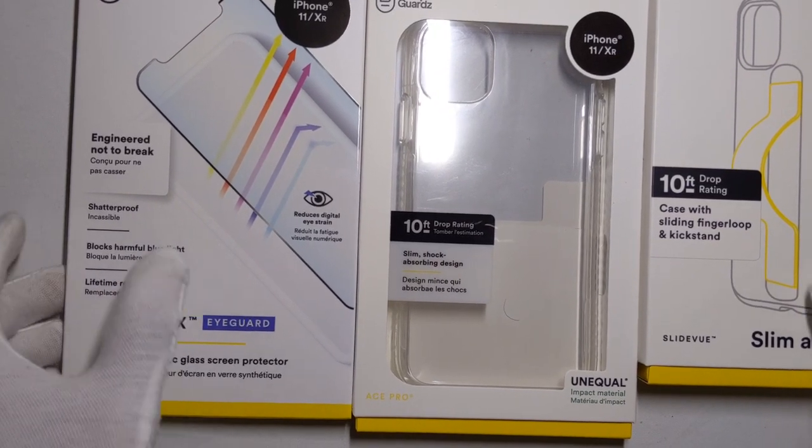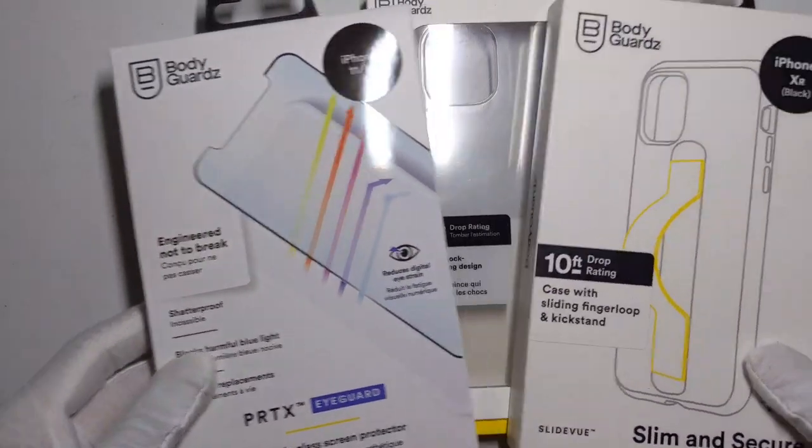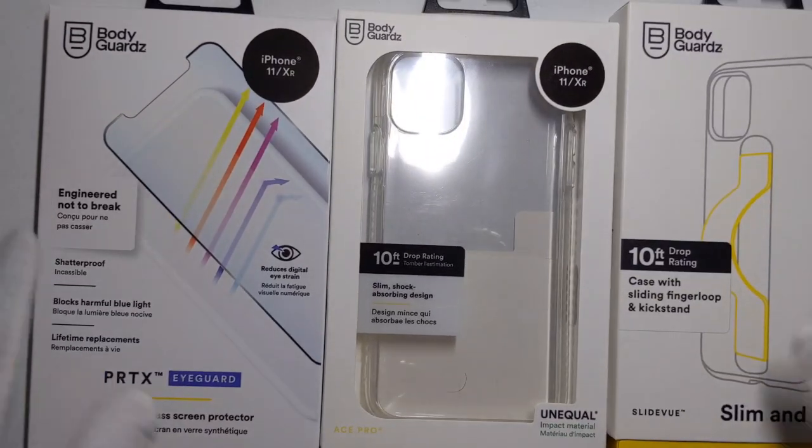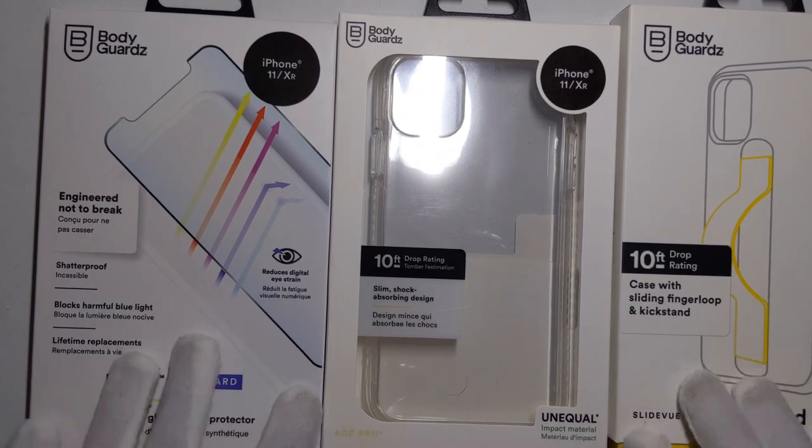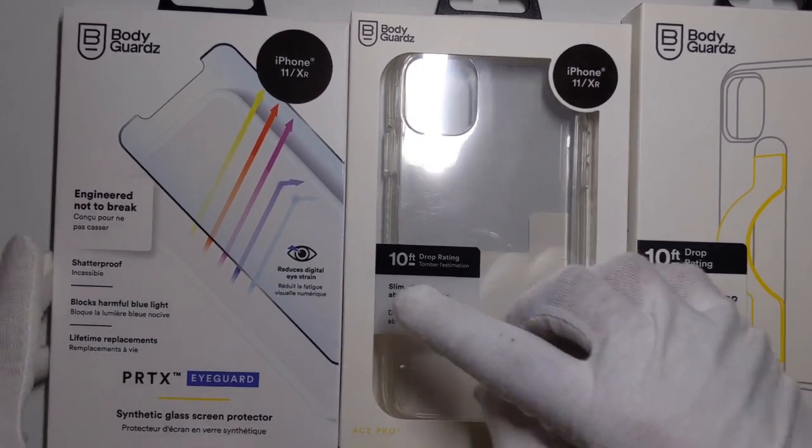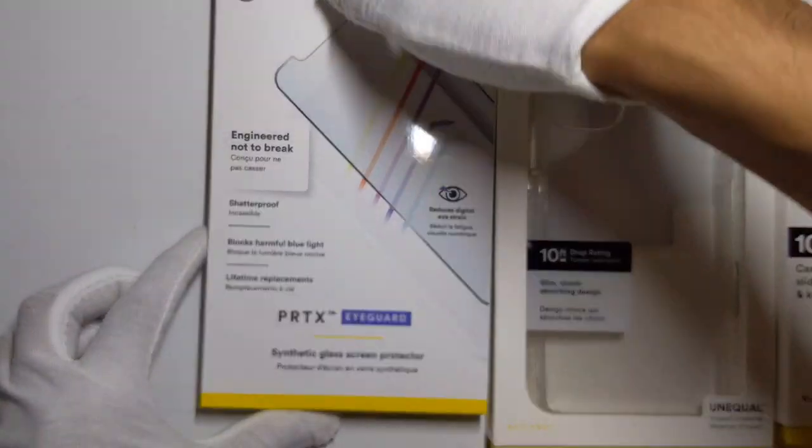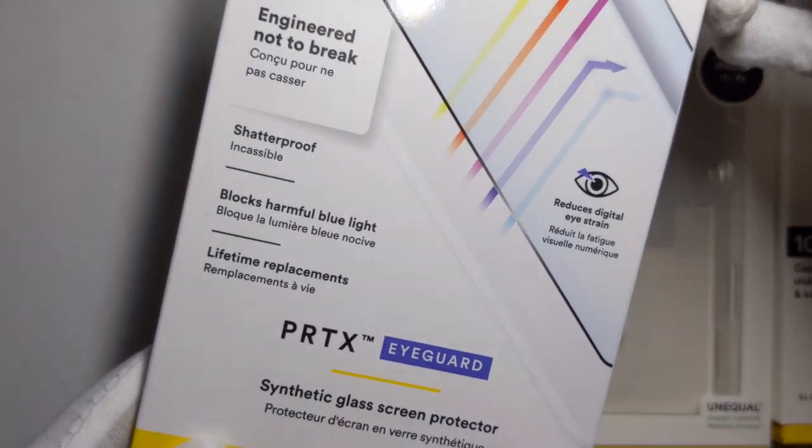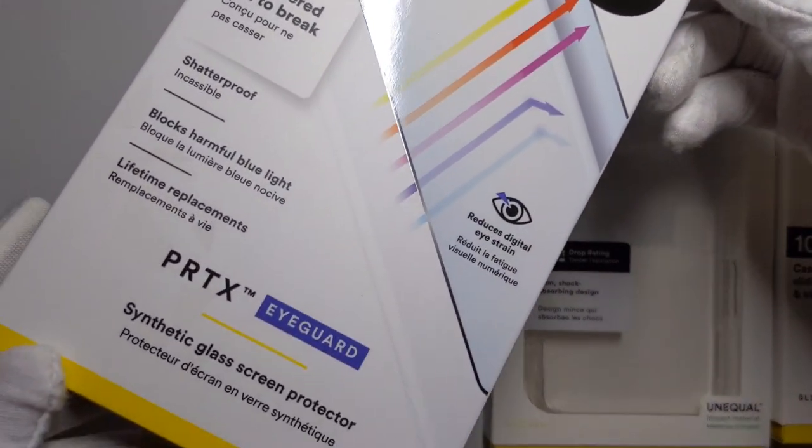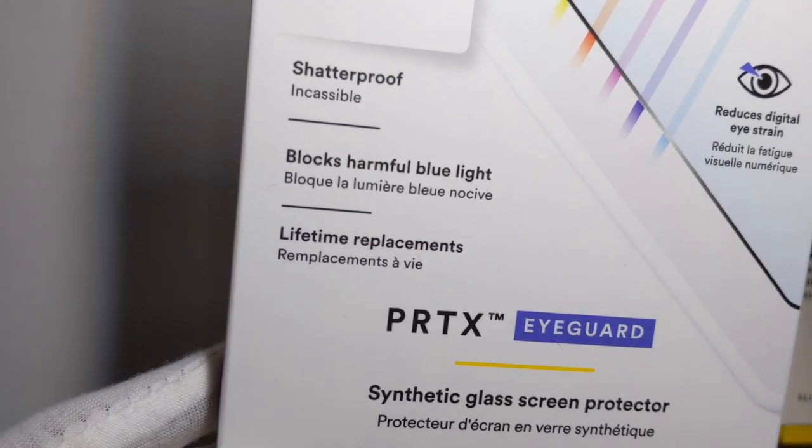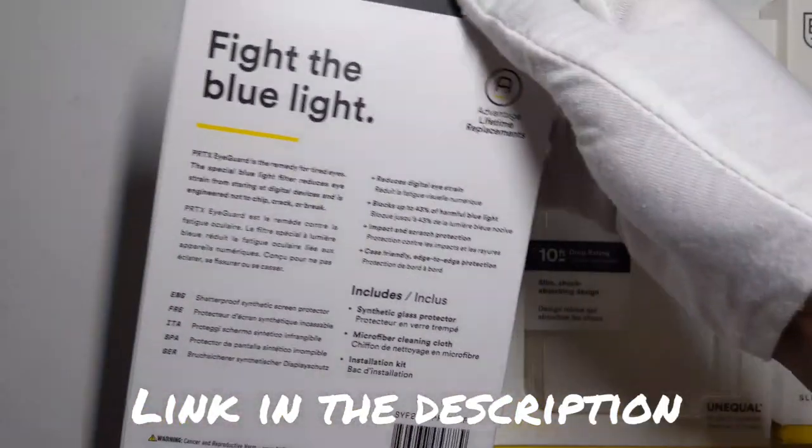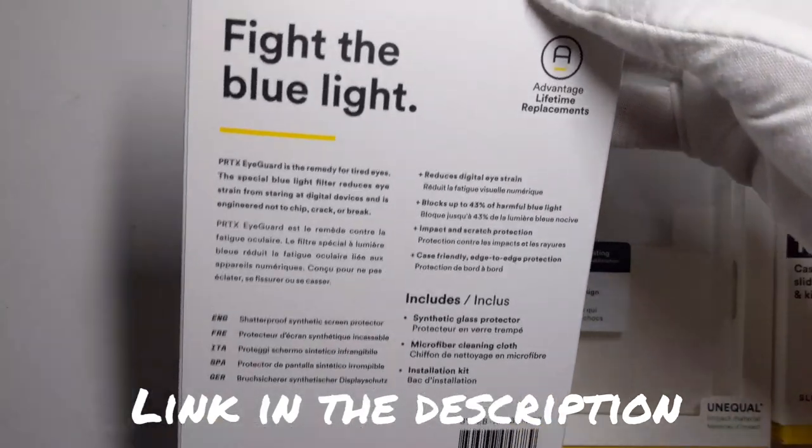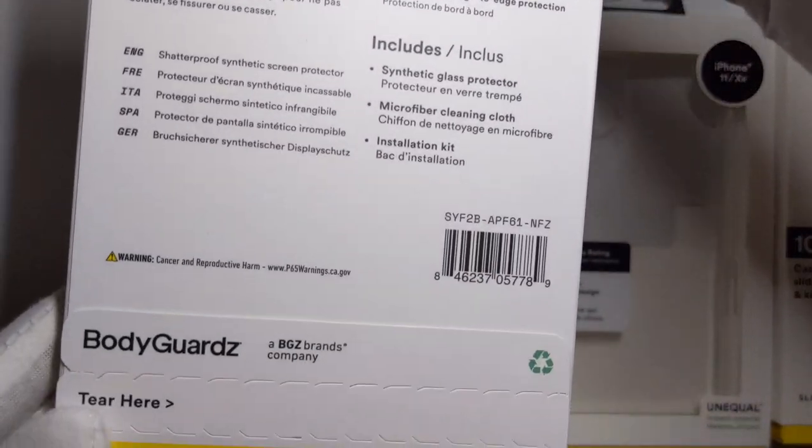What is going on guys, today in this video we have three amazing premium products by BodyGuardz. This is their iPhone 11 premium cases, including a tempered glass Pertex iGuard synthetic glass screen protector. It's shatterproof, blocks blue light, and has limited replacement warranty. It has some information on the back.